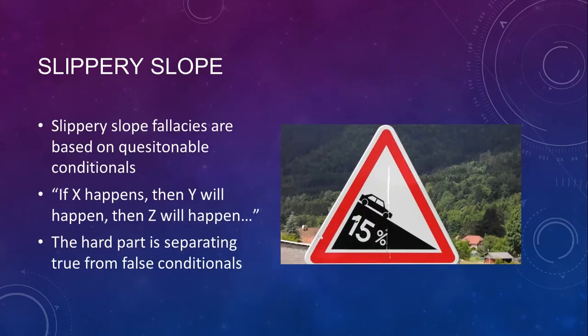Slippery slope fallacies are based on questionable conditionals of the form: if X happens, then Y will happen — and often there's a chain: then Z will happen, and so on. The hard part is separating true or reliable conditionals from false or unreliable ones. Calling something a slippery slope is to say X doesn't really lead to Y, Y doesn't really lead to Z.